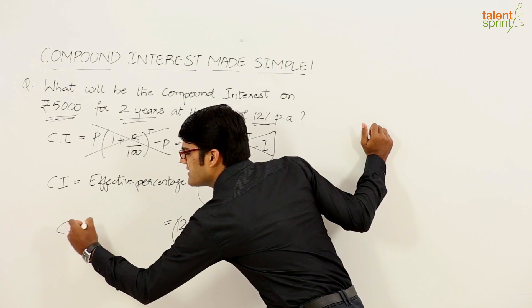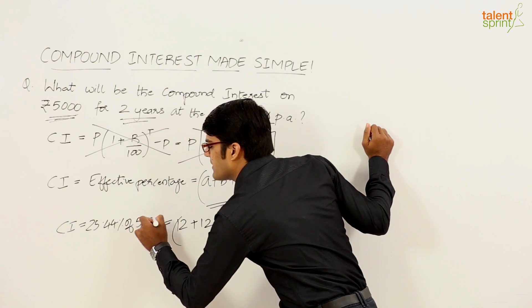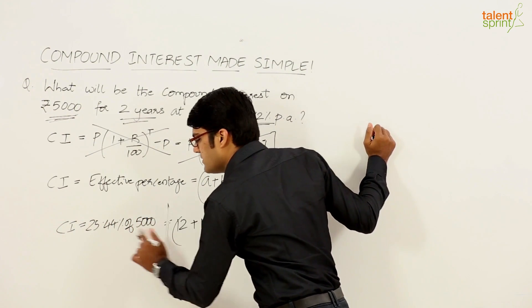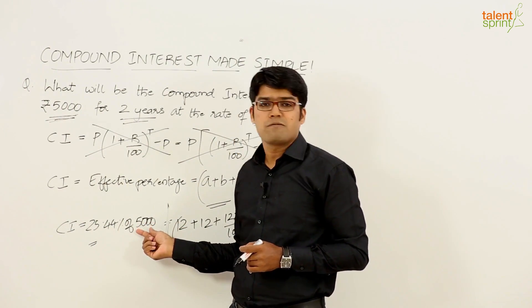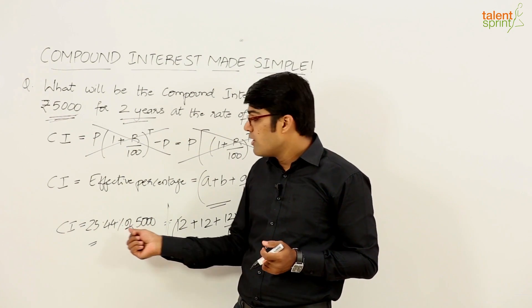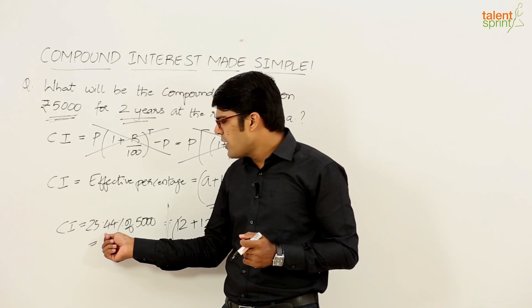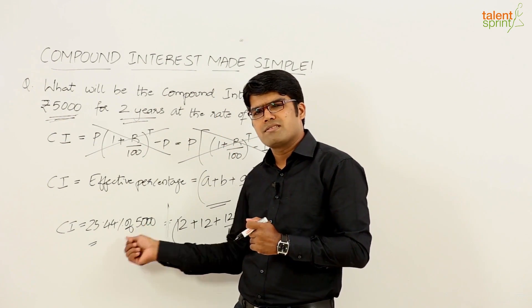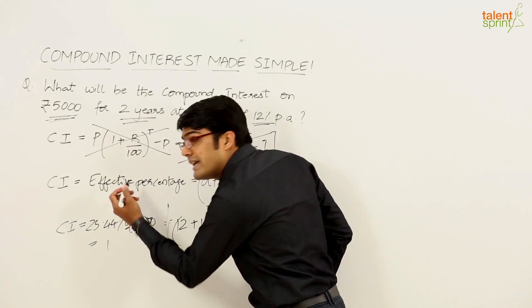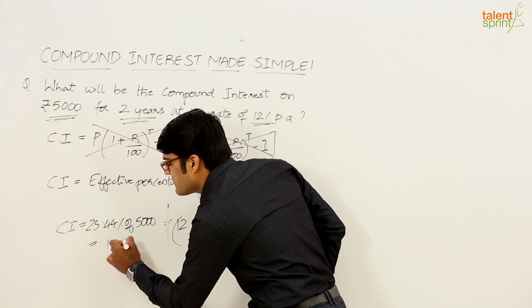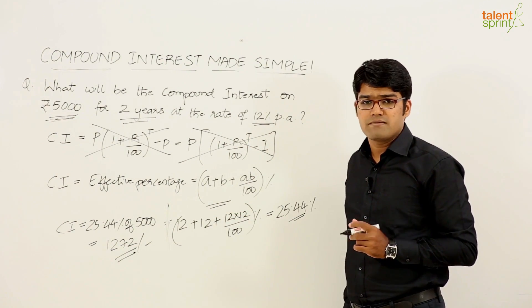We can say the compound interest here is going to be 25.44 percent of 5000 and if you are strong in your calculations, you can do this calculation very easily. 25 percent of 5000 is 1250, 0.44 percent of 5000 - how do you do that? This is like 0.44 divided by 100 into 5000. Just simplify that, you will get 22 here. So 1250 plus 22 is 1272. That is the final answer. We can say the compound interest here is 1272.